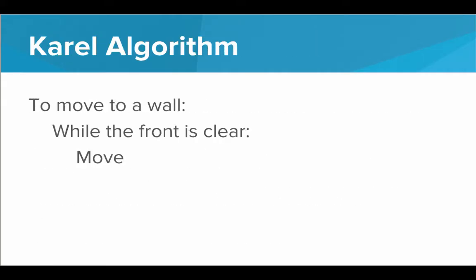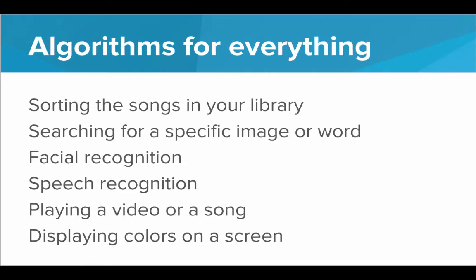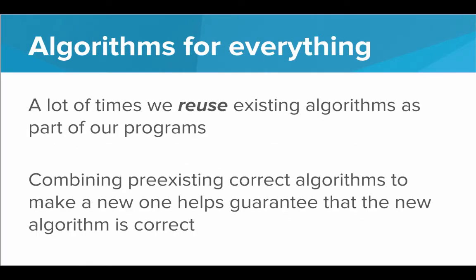This helps guarantee that the new algorithm is correct because we used correct algorithms as the building blocks. For example, when we were writing Karel programs, a lot of times we had to make Karel move to a wall — that was a very common step in larger programs, whether Karel is running a race or finding a wall. So this was an algorithm that we reused a lot in different Karel programs — a building block for larger algorithms.